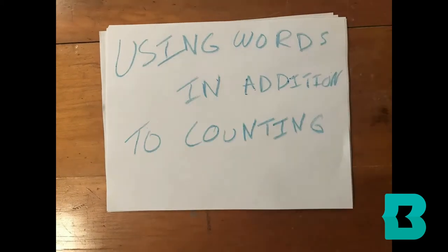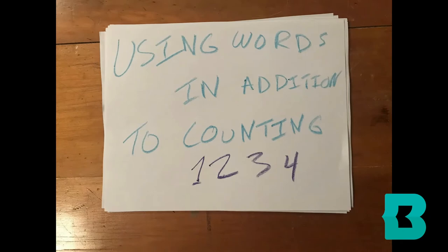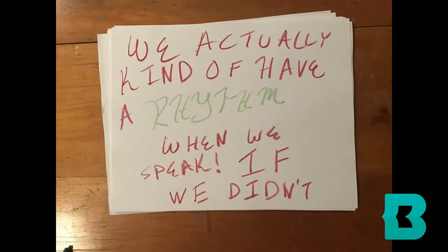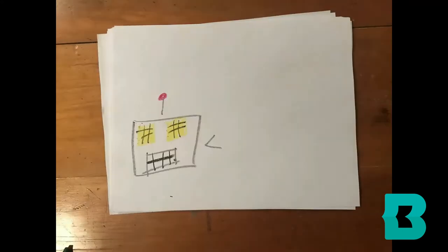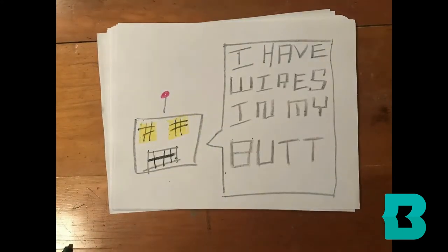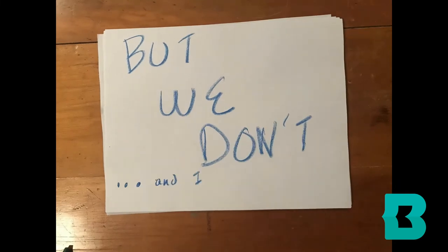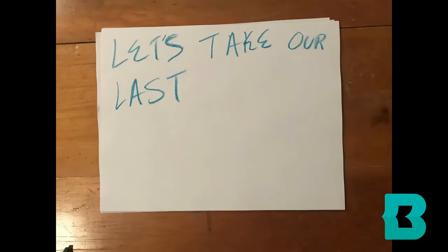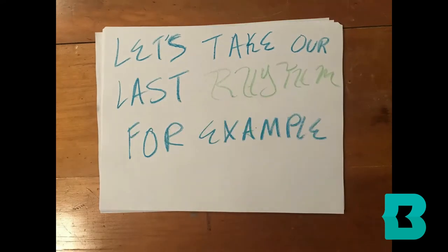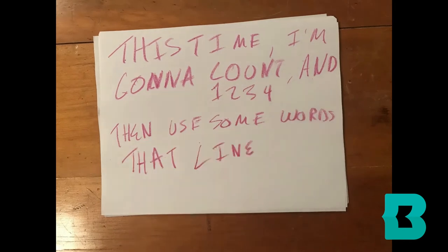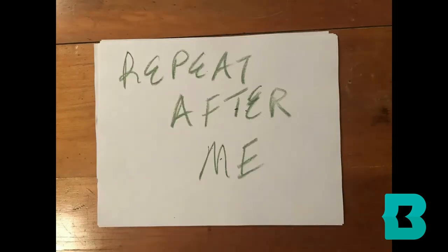I like to make this a little easier by using words in addition to counting. We can do this because we actually kind of have a rhythm when we speak. If we didn't, we'd all talk like robots. But we don't, and I don't have wires in my butt. Let's take our last rhythm, for example. This time, I'm going to count and then use some words that line up with the rhythm we have. Repeat after me.